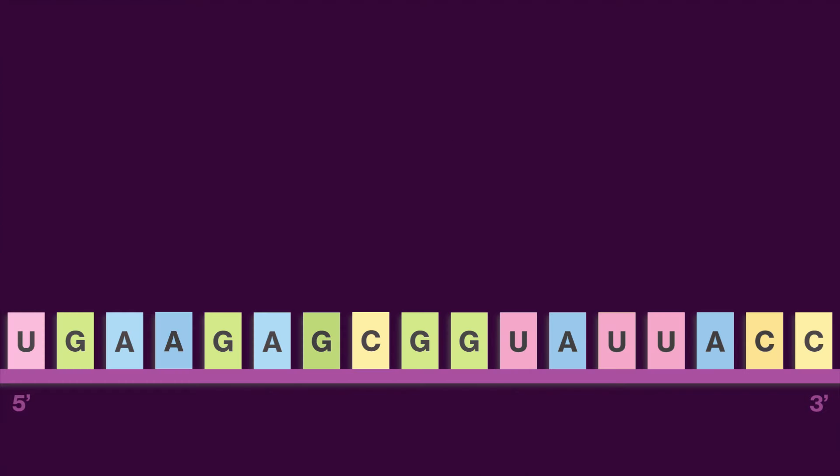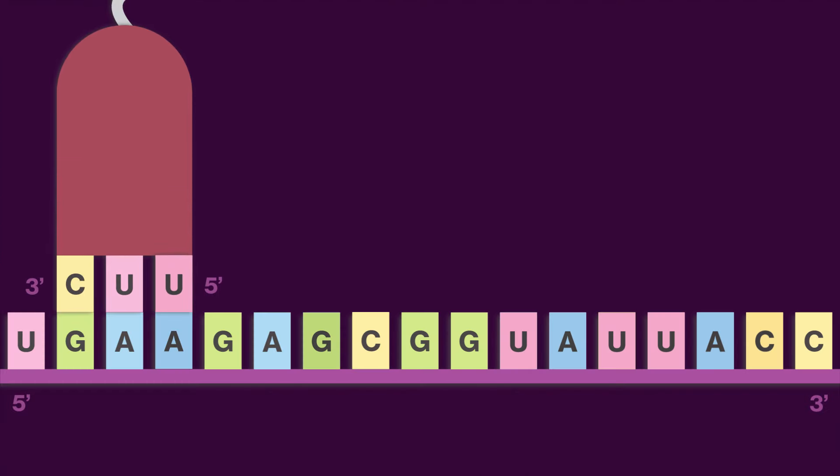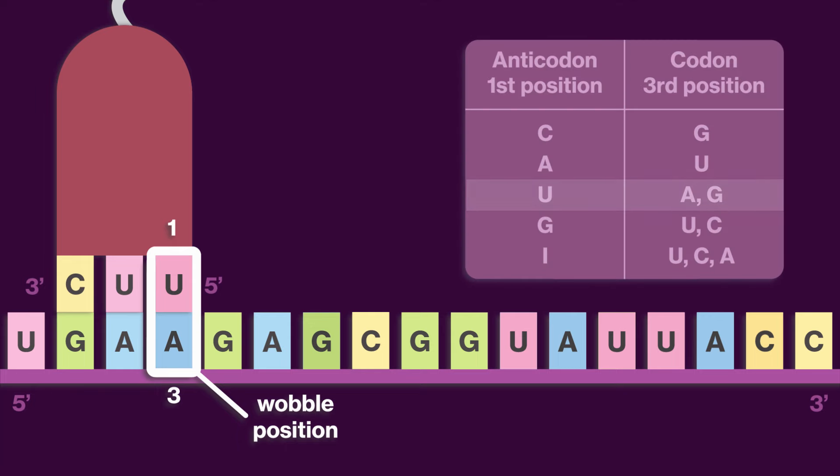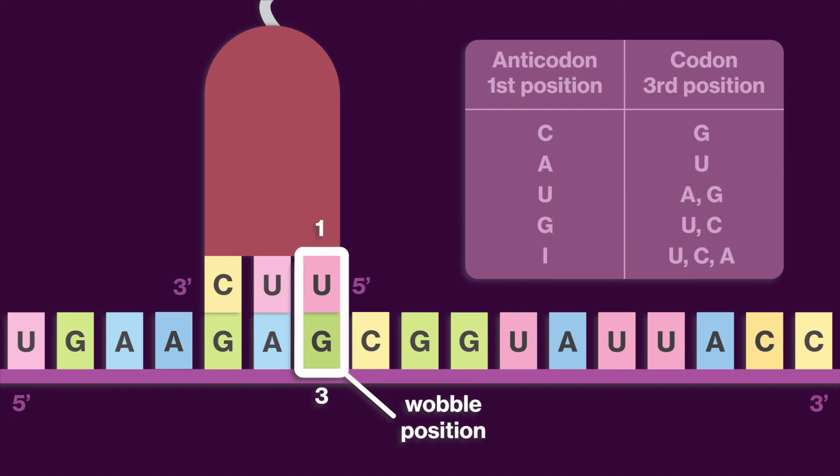When a tRNA binds to an mRNA codon, the first nucleotide in the tRNA's anticodon has some flexibility in pairing with the third nucleotide in the codon. For example, a uracil in the first position of the anticodon can pair with either adenine or guanine in the third position of the codon.